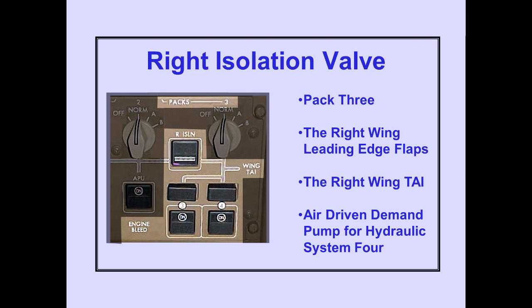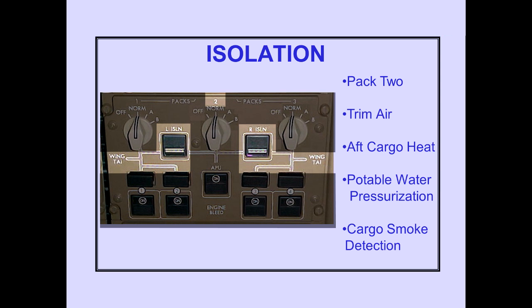With the right isolation valve closed, pack three, the right wing leading edge flaps, the right wing thermal anti-ice duct, and the air-driven demand pump for hydraulic system four are isolated from the rest of the duct system. With both the left and right isolation valves closed, pack two, trim air, aft cargo heat, hydraulic reservoir, potable water pressurization, and air flow for cargo smoke detection are isolated from the engine bleed air sources. In this condition, these systems cannot operate.